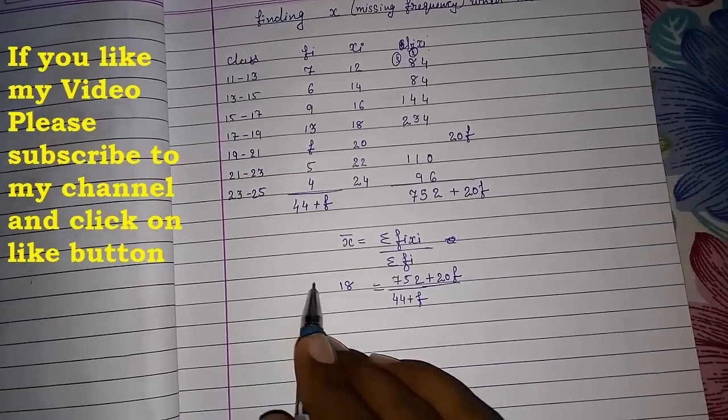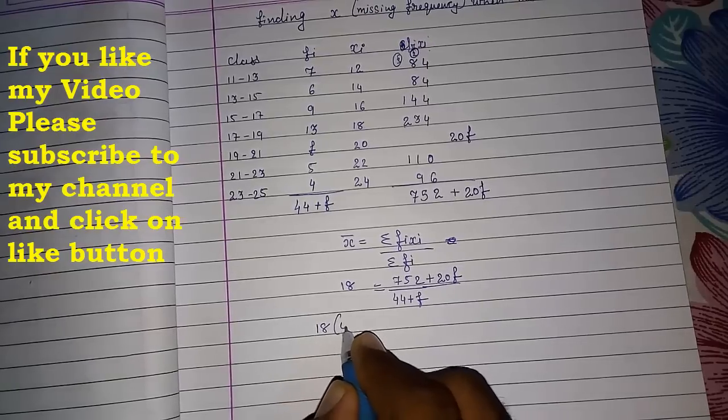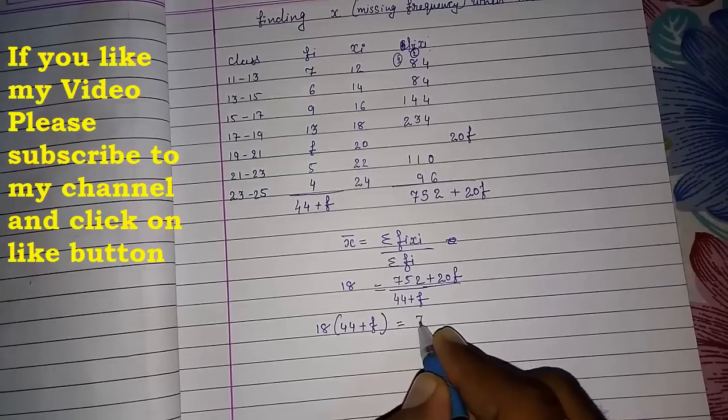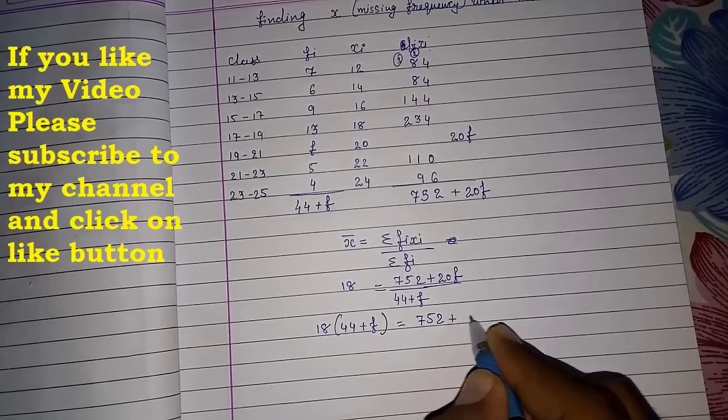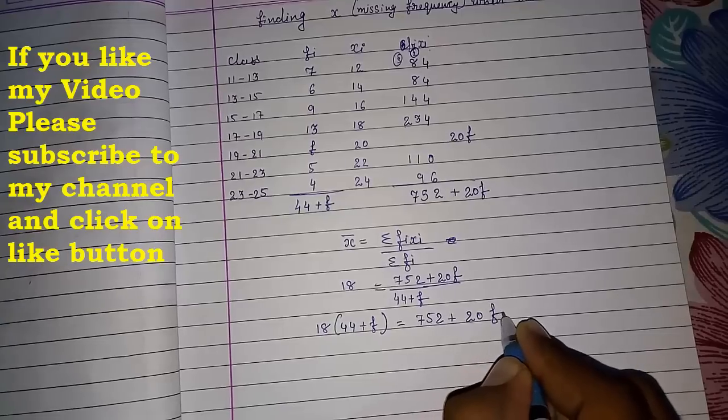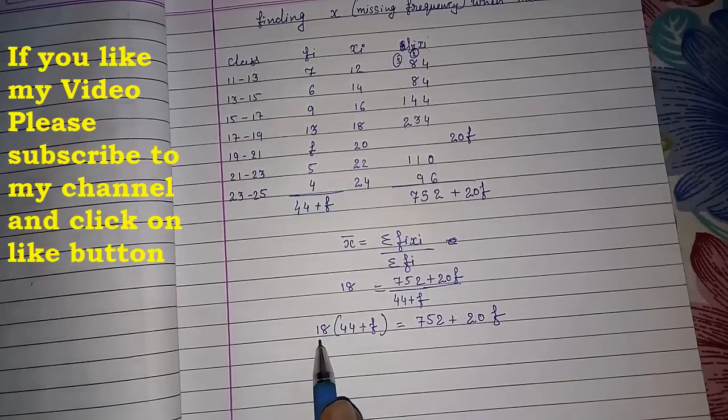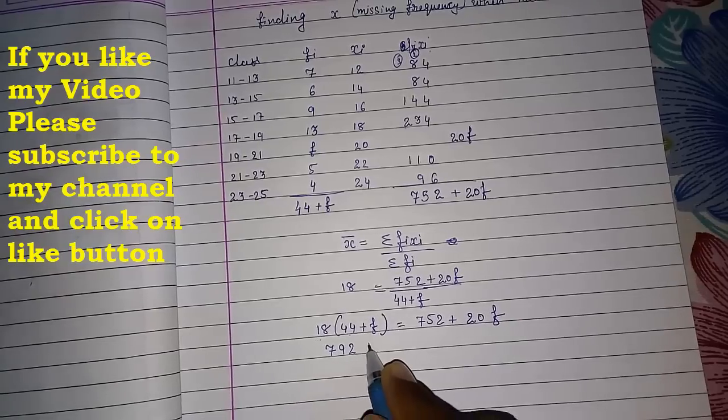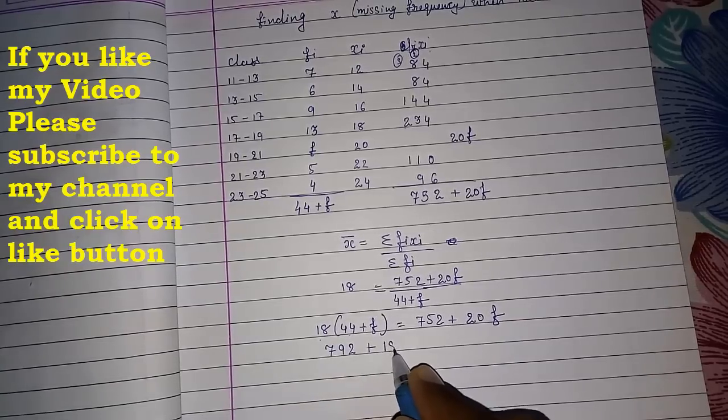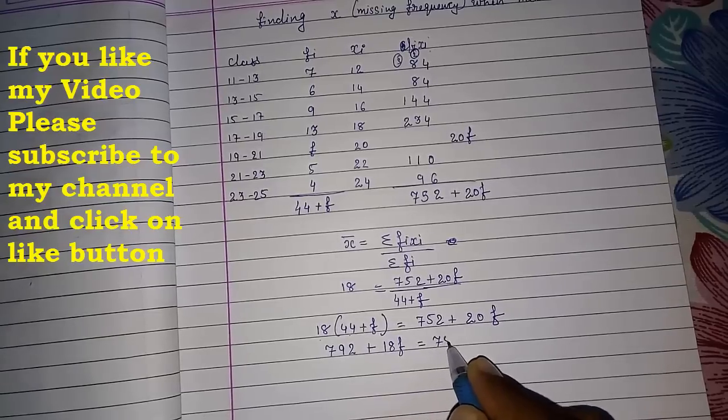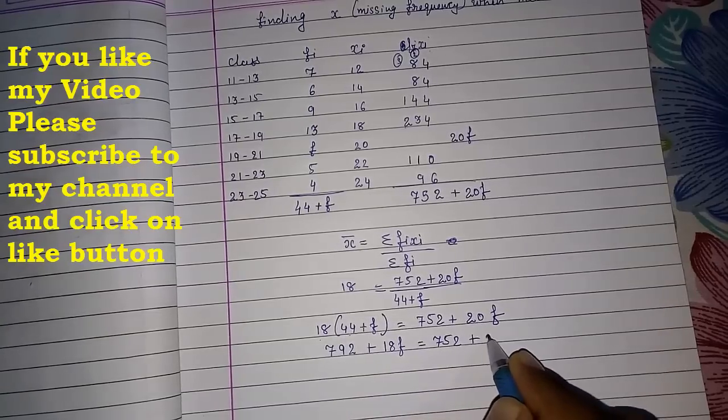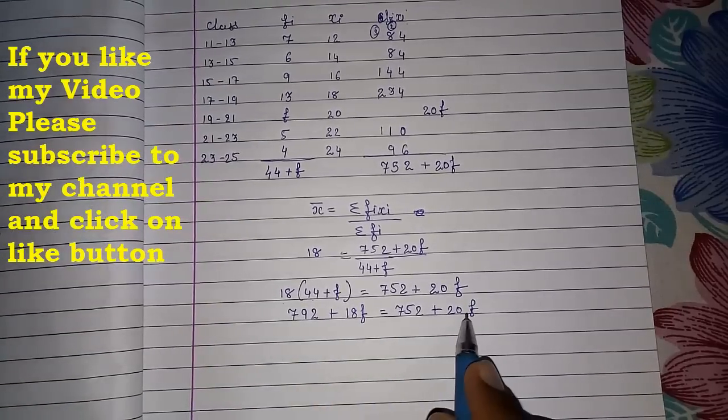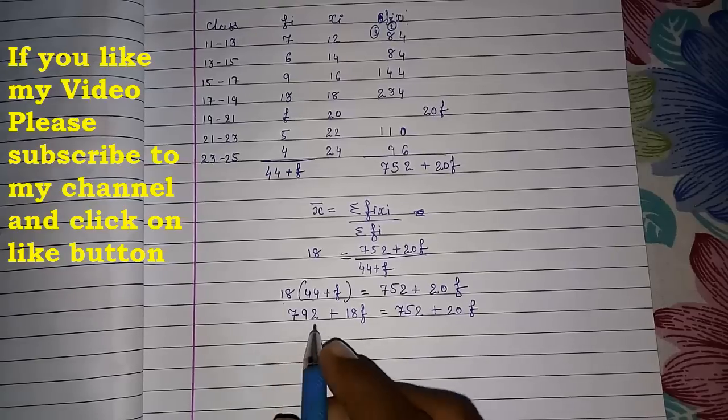18 times 44 plus F, and this will be 752 plus 20F. Now we have to multiply this 18 into 44, it will be 792, plus 18 into F, it is 18F, equals to 752 plus 20F. So now we know I will take this 18F on this side and 752 on that side. 792 minus 752 gives you 20F minus 18F, so it is 2F and 40.